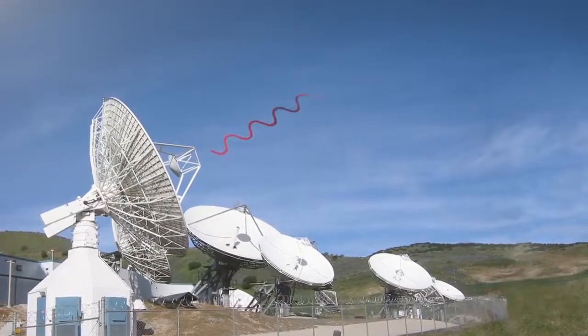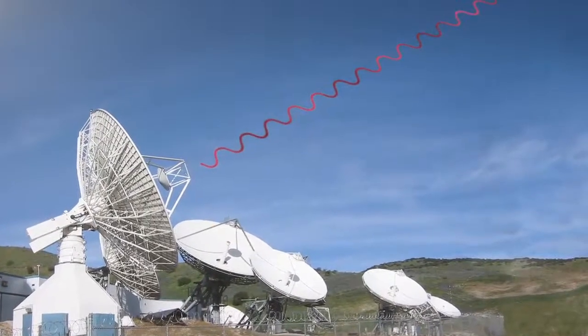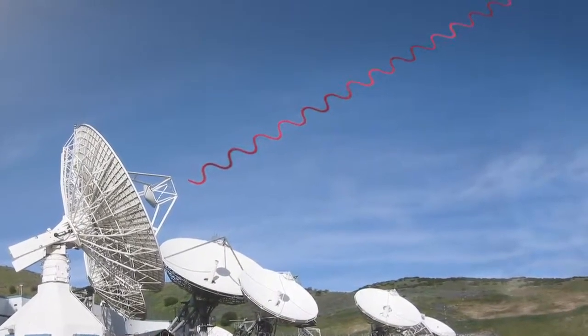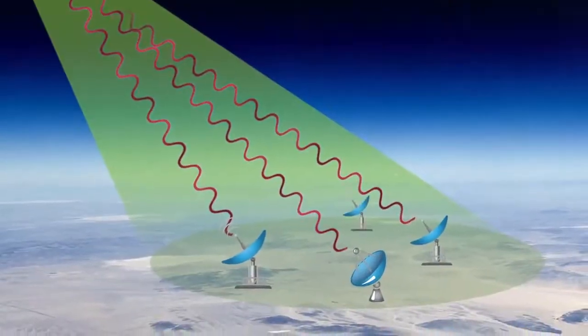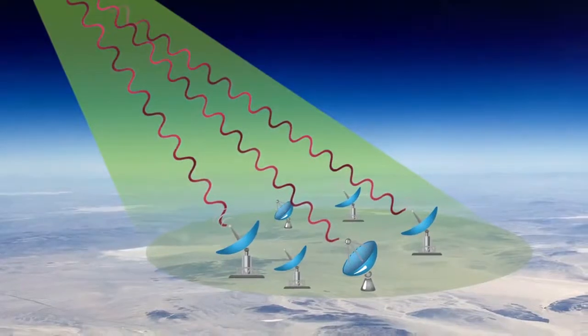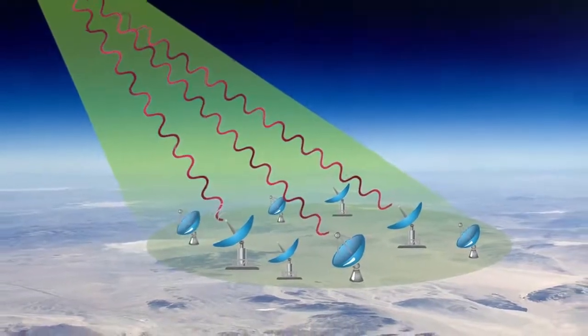With just a transmitter and a satellite dish, an adversary anywhere in the footprint can jam a satellite signal. Not all interference is malicious. Some is inadvertent, caused when operators unknowingly transmit at the wrong frequency.